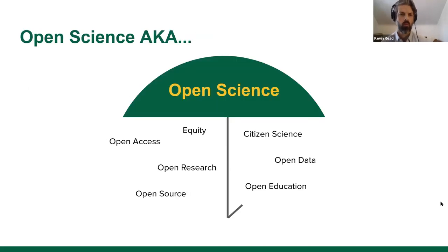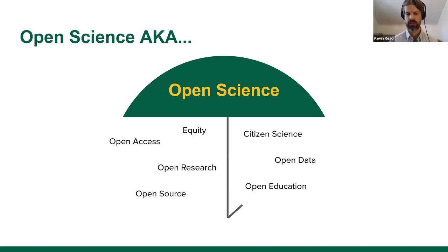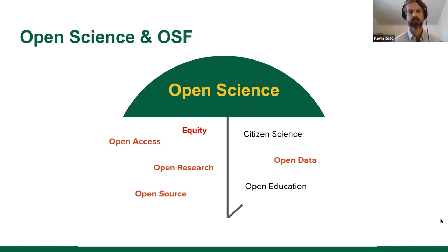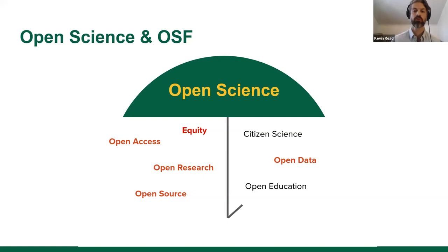Open Science is really an umbrella term for many different concepts — whether it's open access, open research, open source, open data, or open scholarship. All of those are components of what Open Science is about. When we think about Open Science in the context of the Open Science Framework tool, we're looking at it from an open research, open data, open source, open access, and equity perspective.